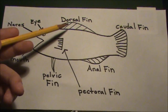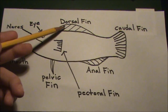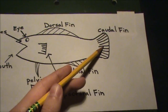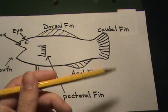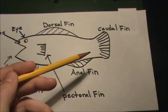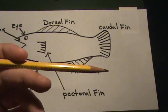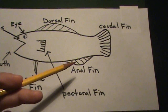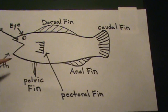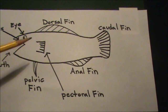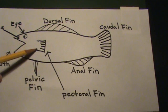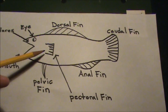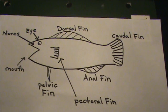Up top we have the dorsal fin, which is used for stability while swimming. And in the back we have the caudal or tail fin, which is used as the power for their swimming — they propel themselves with this. The anal fin, also for stability. Same thing with the pelvic fin. And here in the middle we have the pectoral or arm fins, which they use for turning in the water and also for stability.